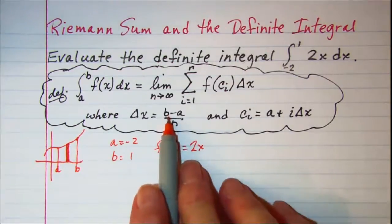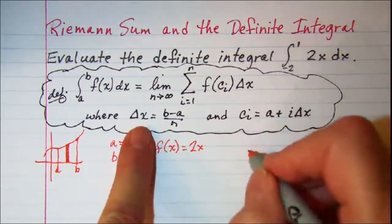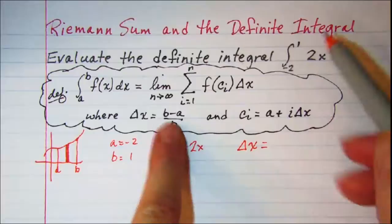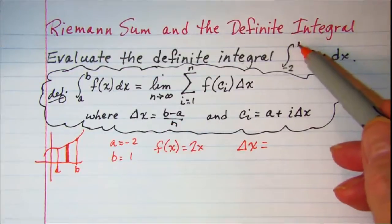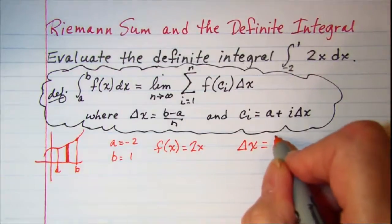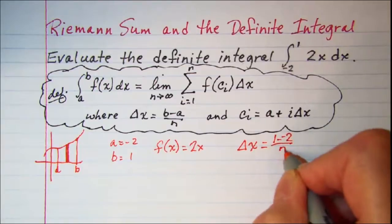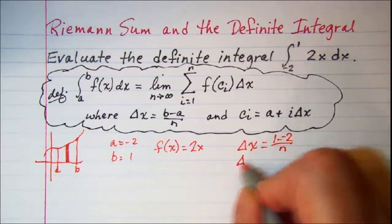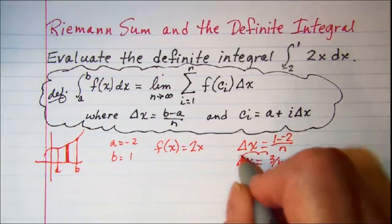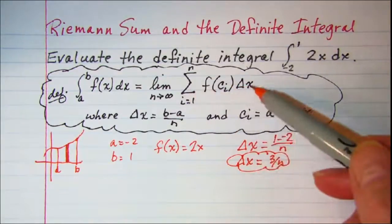What we need to do is find delta x. In our case, delta x is b minus a divided by n, which is 1 minus negative 2 divided by n. So delta x is 3 over n. We are going to use this in our limit definition of the definite integral.